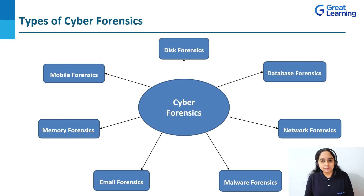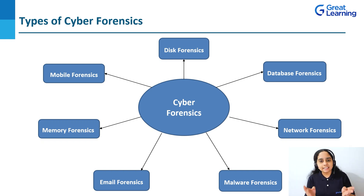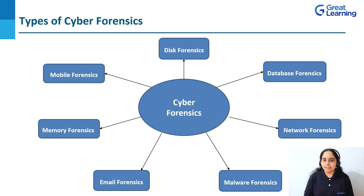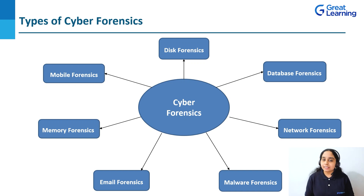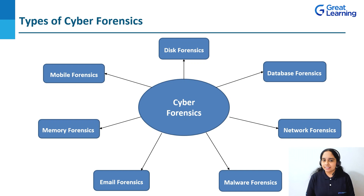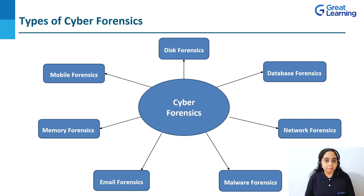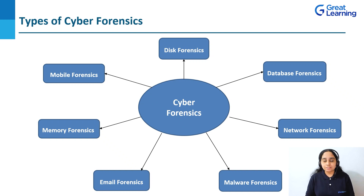The third type is network forensics, which is the process of investigating and analyzing network traffic to find out the source of attack and other valuable evidence. The fourth type is malware forensics, which is the process of identifying the malicious code to find out who the culprit is and the reason behind the attack. Malware is software that gets installed into your computer when the user clicks on a dangerous link or email. Few popular types of malware are virus, worms, trojan, and ransomware.